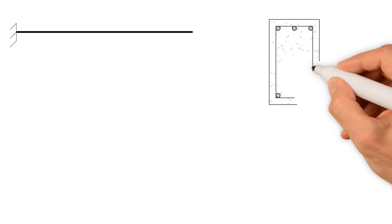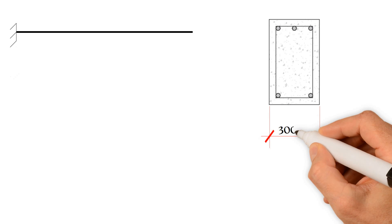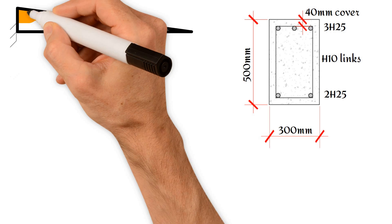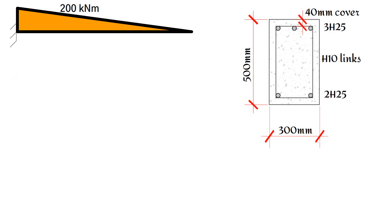We have a reinforced concrete cantilever beam 300mm width and 500mm deep with three 25mm steel bars at the top and two at the bottom, as well as a 10mm diameter link with a 40mm cover. The beam is designed to resist a hogging bending moment of 200kNm. How will we calculate the maximum length of concrete beam that will not result in excessive deflection?